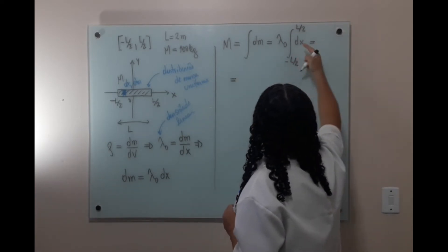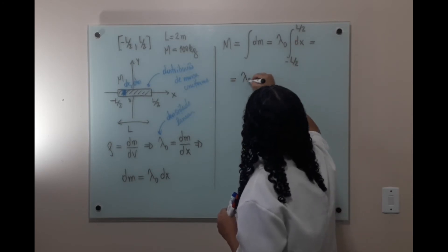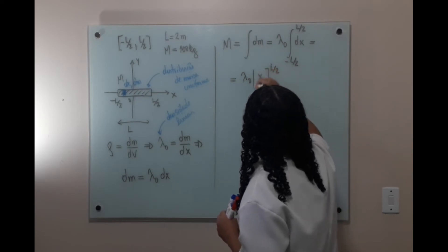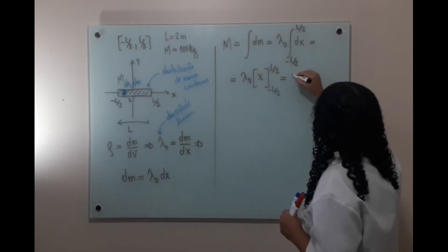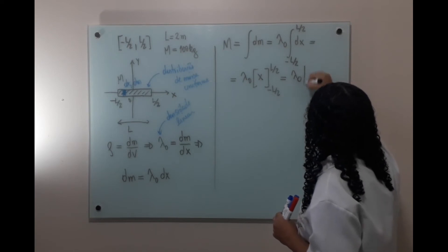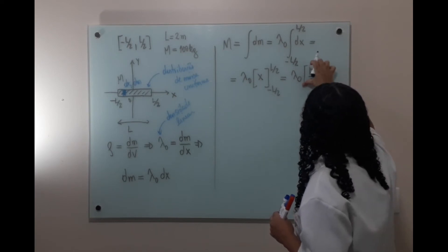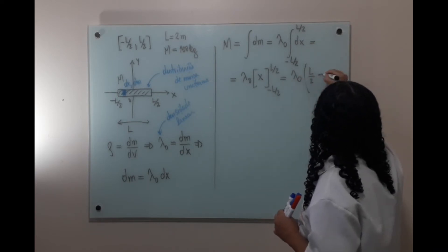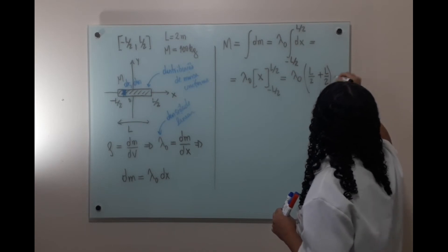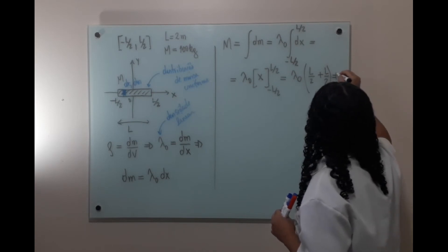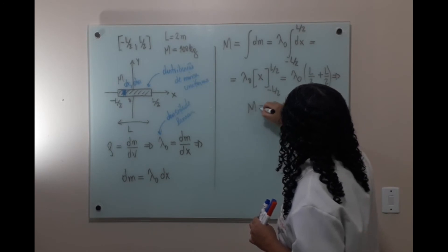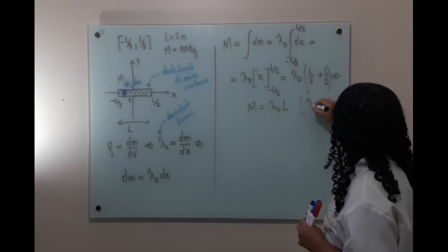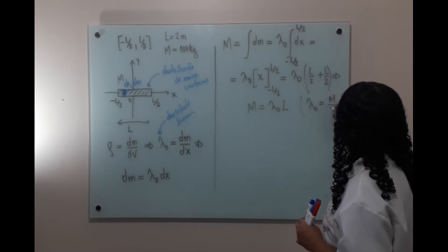A integral de 1 dx é x, avaliada de menos L/2 até L/2. Isso vai dar λ₀ vezes (L/2 - (-L/2)), ou seja, λ₀ vezes L. Portanto, a nossa massa é λ₀ vezes L, ou seja, λ₀ é a massa total sobre o comprimento total.